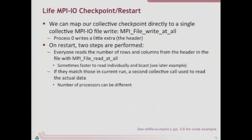On restart, we perform two steps. First, everybody reads the rows and columns to verify we have what we expect in terms of array dimensions — sometimes it's faster to read in one place and broadcast; either way is okay. Then, assuming those match up, we use a second call to read the data out of the file. Because we wrote it in global order, you can start with a different number of processes than you started with.